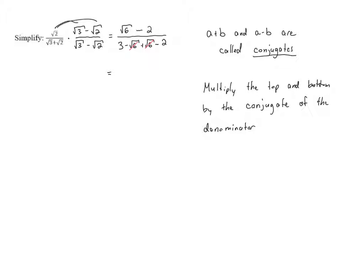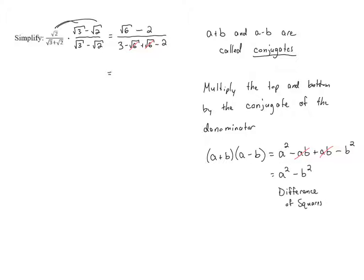This is always going to happen when we multiply conjugates. If we have a sum of two terms times a difference of the same terms and we FOIL, the product of the first terms is a squared, the outer terms give negative ab, the inner terms give positive ab, and the last terms give negative b squared. The negative ab and positive ab cancel, leaving us with a squared minus b squared — the difference of two squares. This is precisely why we multiply by the conjugate.